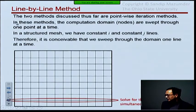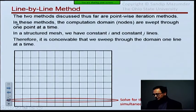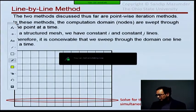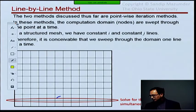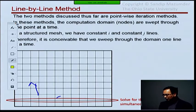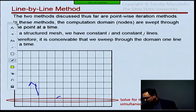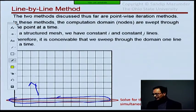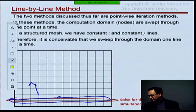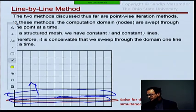The basic idea is that here, in this picture, I'm assuming we have Dirichlet boundary conditions at the bottom, so we are not going to solve for the bottom nodes. We're going to start from the second row of nodes and move up one line at a time. All these nodes I'm going to solve for simultaneously, not one at a time.